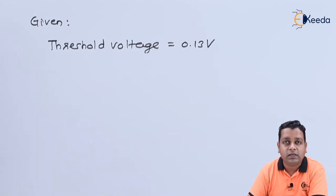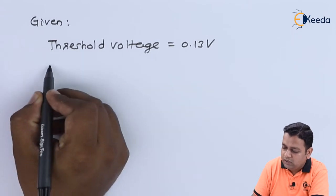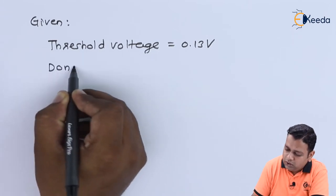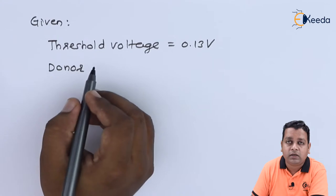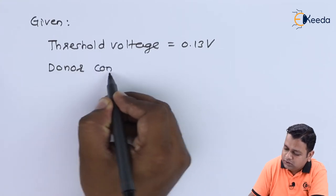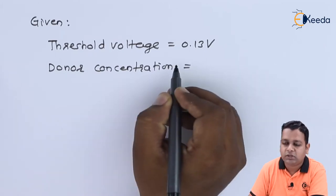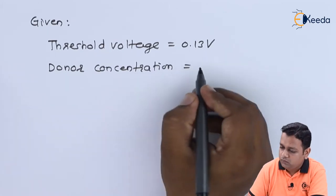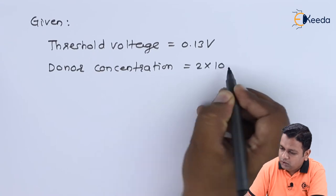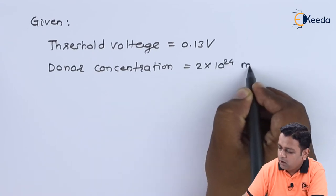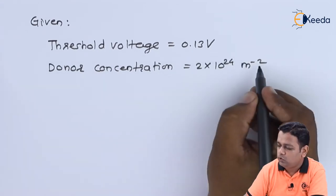The second value is a concentration denoted by ND, D for donor. It is the donor concentration. ND holds the value 2 into 10 raised to power 24 per meter cube.